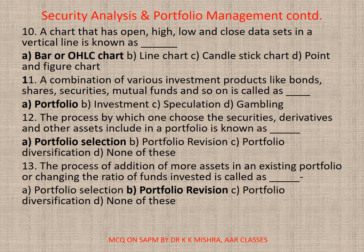Question 11: A combination of various investment products like bonds, shares, securities, mutual funds, and so on is called — correct option is A — a portfolio. Question 12: The process by which one chooses the securities, derivatives, and other assets included in a portfolio is known as — portfolio selection. Question 13: The process of addition of more assets in an existing portfolio or changing the ratio of funds invested is called — correct option is B — portfolio revision.